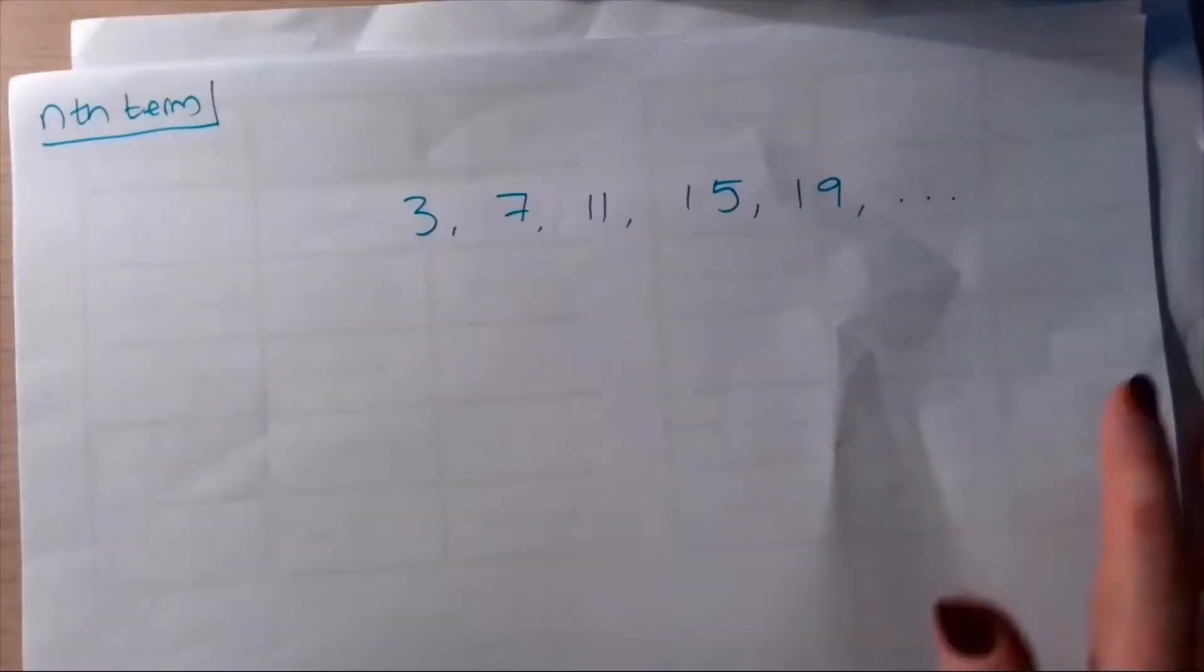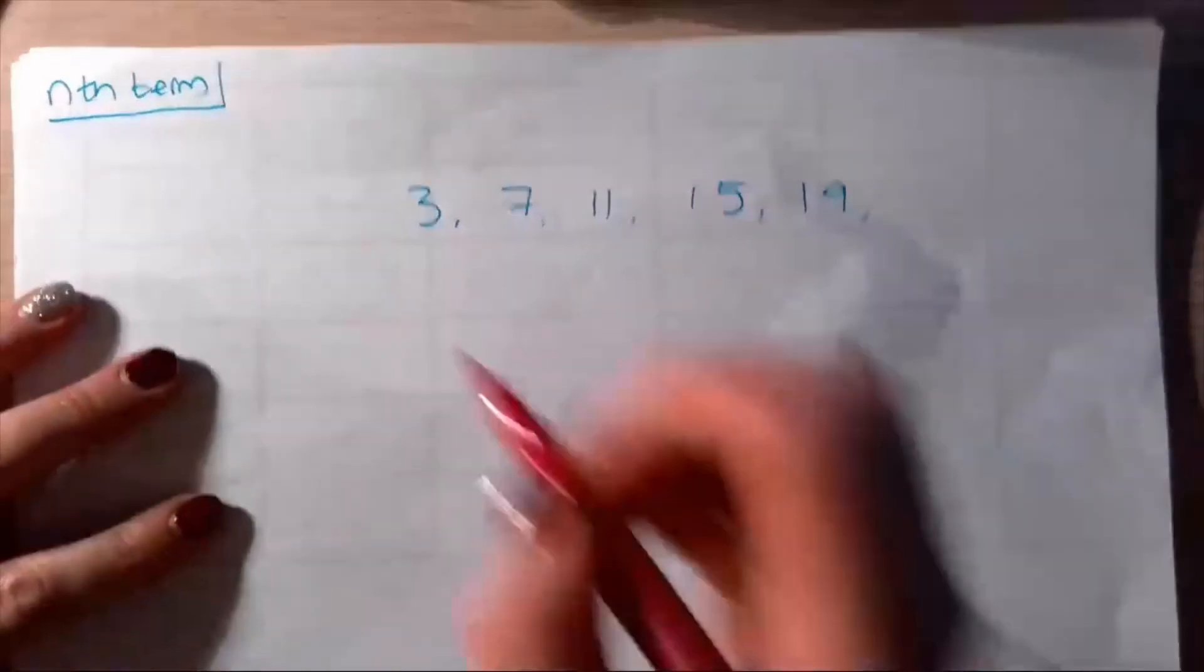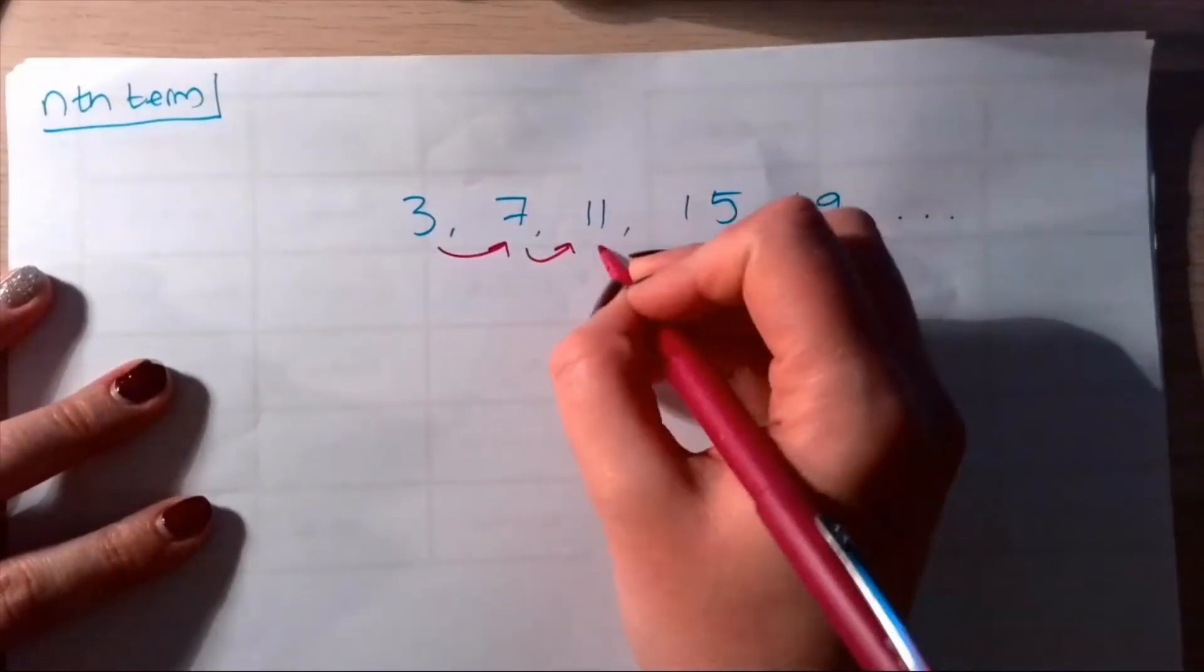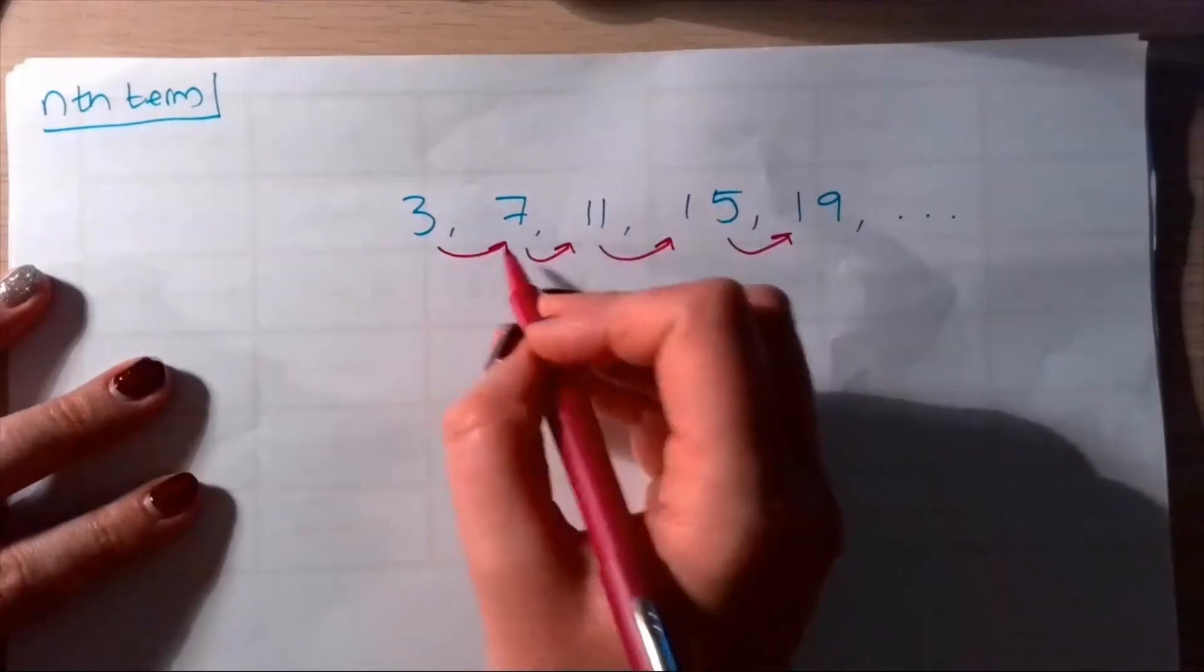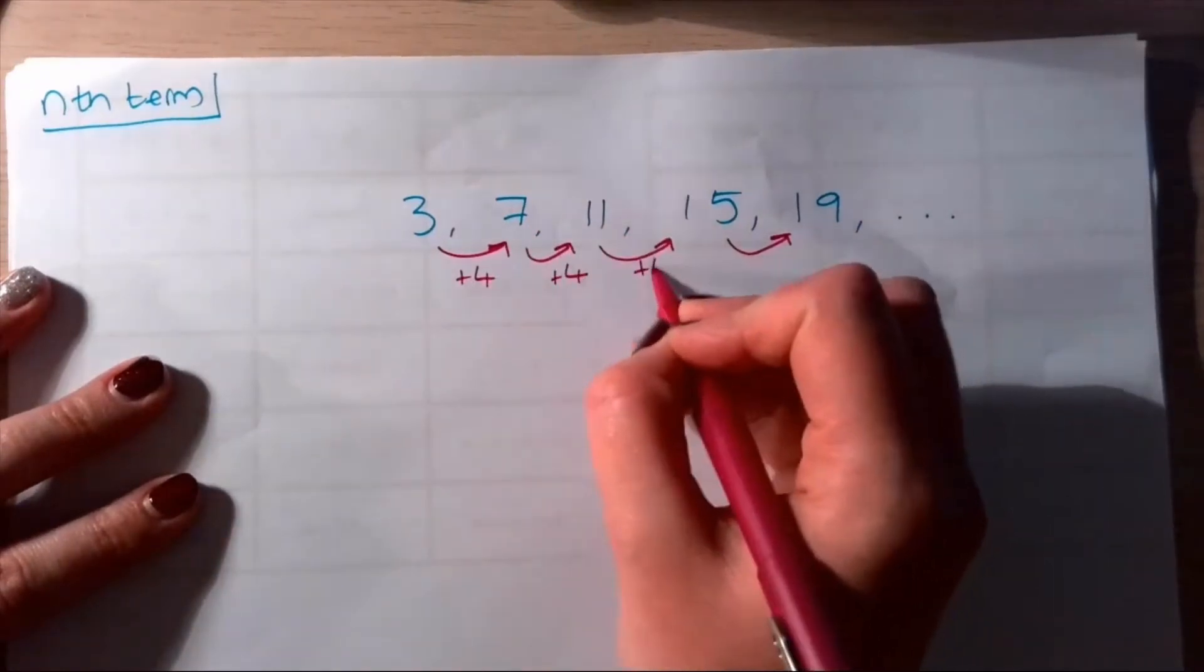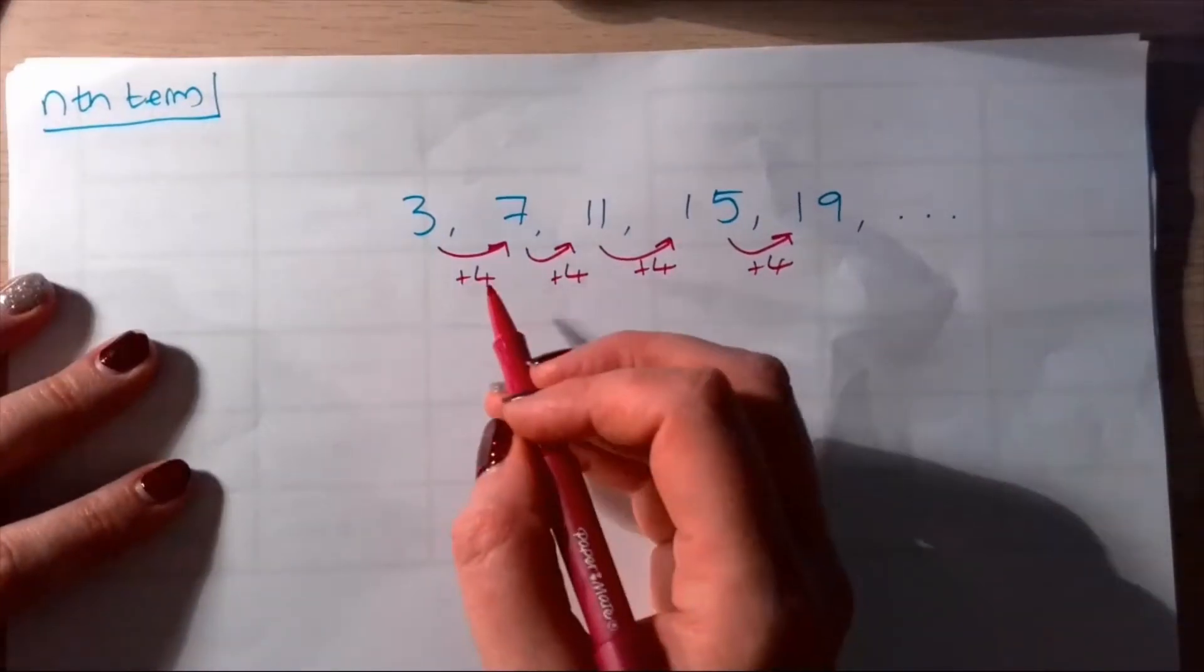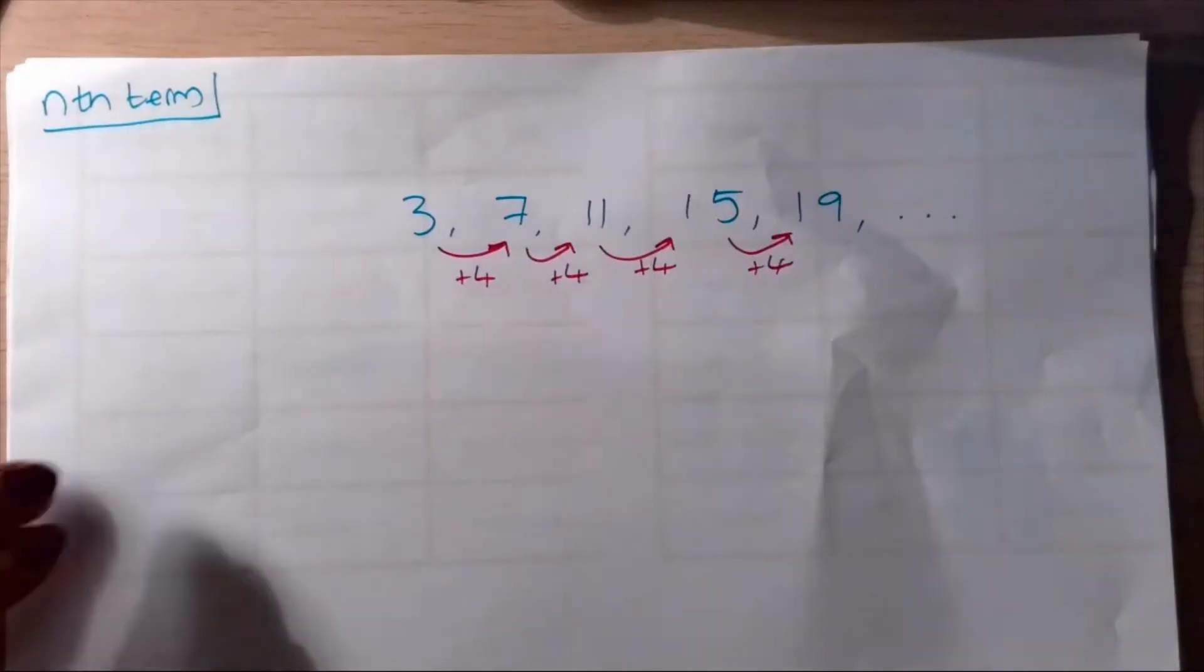Here's another nth term. This time we've got 3, 7, 11, 15, 19. We're going to see what our common difference is. I put a little arrow just to remind myself which way I'm going. Here we're plusing four, plus four, plus four. I'm writing plus four, and on the next example you'll see why it's important I'm not just writing four.